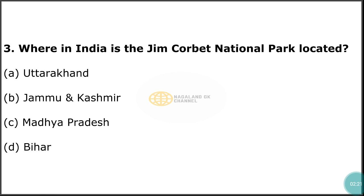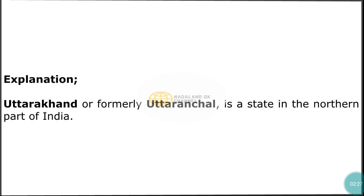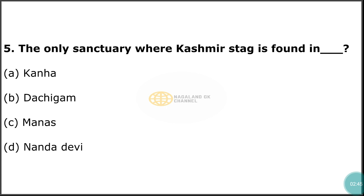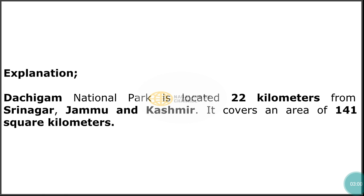The correct answer is option A — Uttarakhand. Uttarakhand, formerly Uttaranchal, is a state in the northern part of India. Question number 4: Kaziranga Wildlife Sanctuary is in the state of? The correct answer is option A — Assam. Question number 5: The only sanctuary where Kashmir Stag is found is? The correct answer is option B — Dachigam. Dachigam National Park is located 22 kilometers from Srinagar, Jammu and Kashmir, and covers an area of 141 square kilometers.